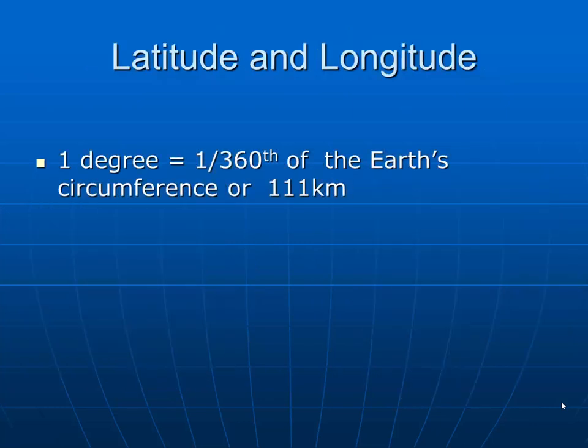One degree of latitude is 1/360th of the circumference of the Earth, which turns out to be 111 kilometers. That's not very precise, so very frequently we'll need to have some greater precision, so let's talk about some of those units.